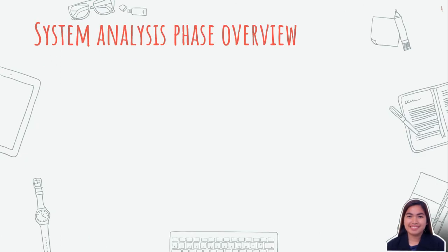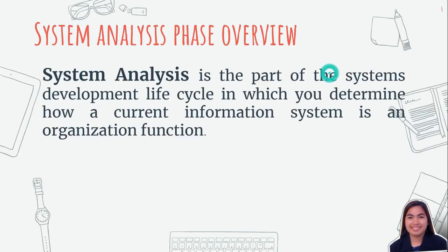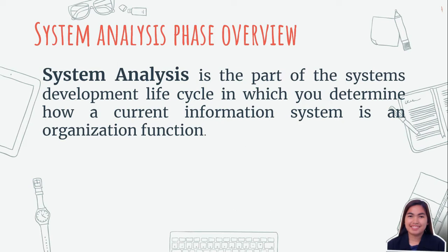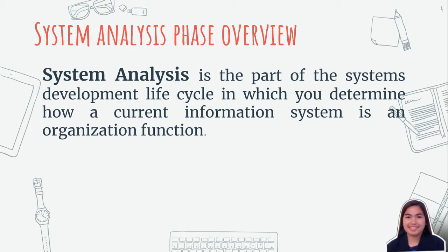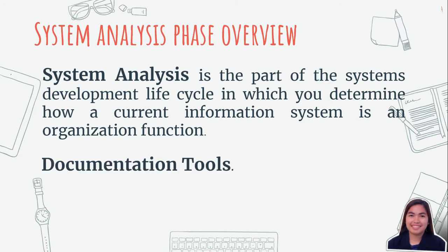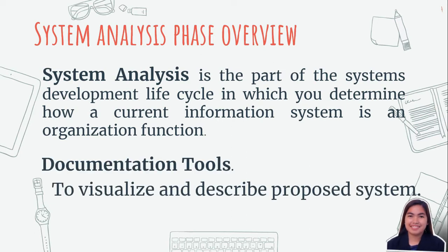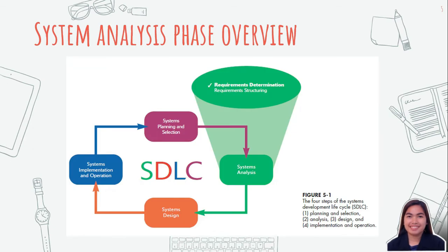System Analysis Phase Overview. System Analysis is the part of the System Development Lifecycle in which you determine how a current information system functions in an organization. Then you assess what users would like to see in a new system. Models and other Documentation Tools are used to visualize and describe the proposed system. The picture illustrates the parts and highlights determining system requirements under System Analysis.